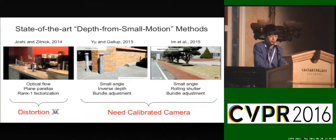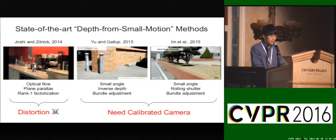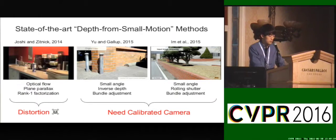Although these methods show promising results under small motion conditions, they should assume either distortion-free images or calibrated cameras. These are critical limitations from a practical perspective. For example, we cannot use daily cameras like smartphones in their approaches, because these cameras have built-in auto-focus functions, and it's not easy to keep their focus unchanged even for a few hours. So to avoid carrying a checkerboard, we try to make a breakthrough achieving self-calibration from small motion.